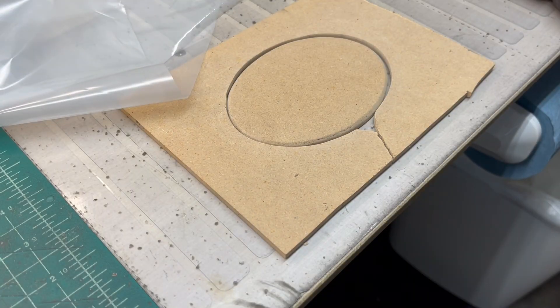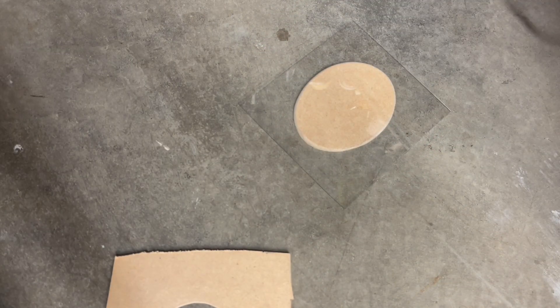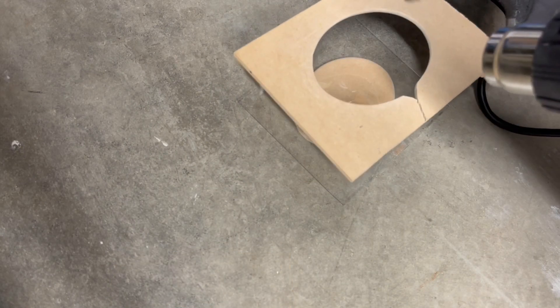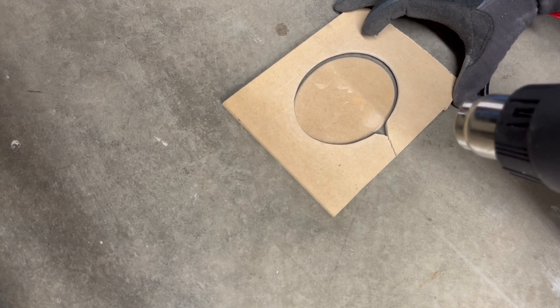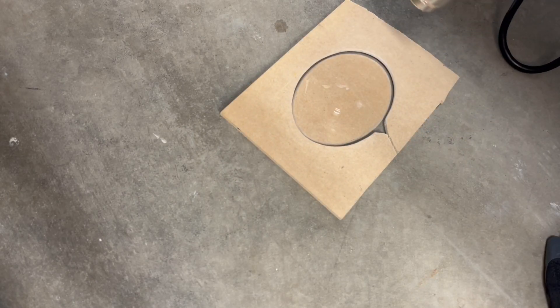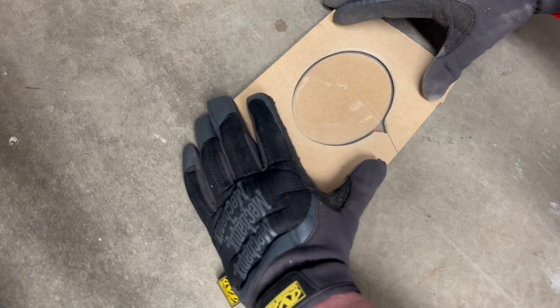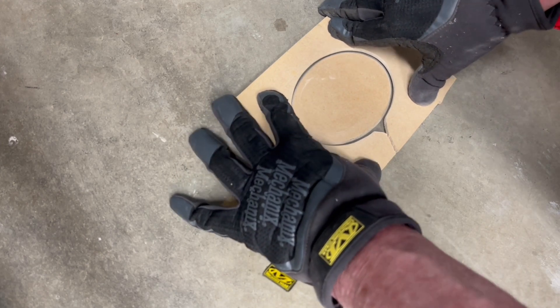Let me get the heat gun out. We'll try to form the first reproduction dial cover. Just placing the PETG over the center form, then I'll apply some heat and just apply some pressure.